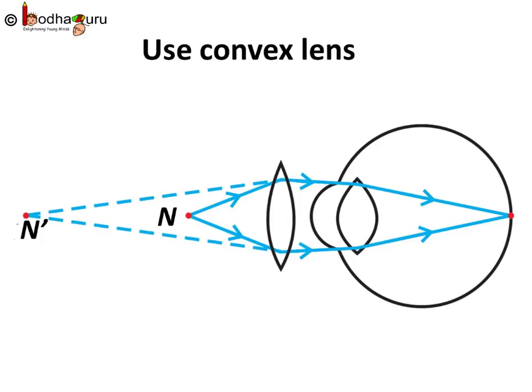The error can be corrected using convex lens of appropriate power to provide additional focusing power required to form an image on retina.